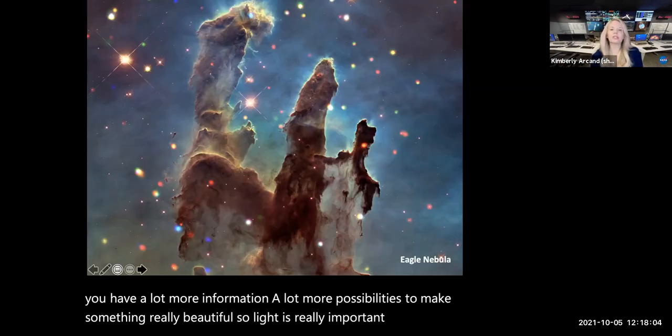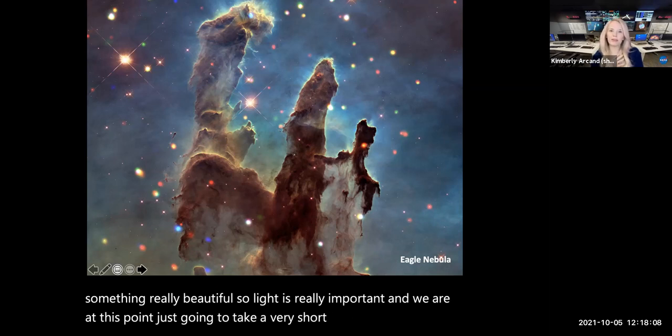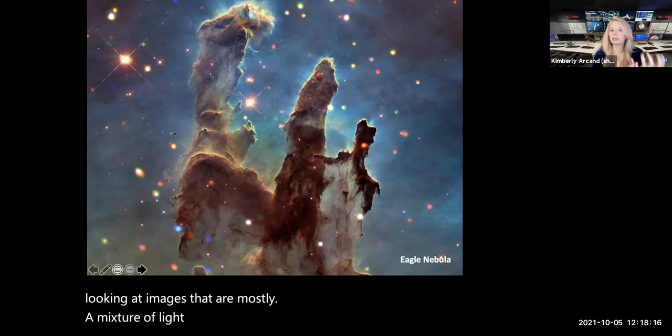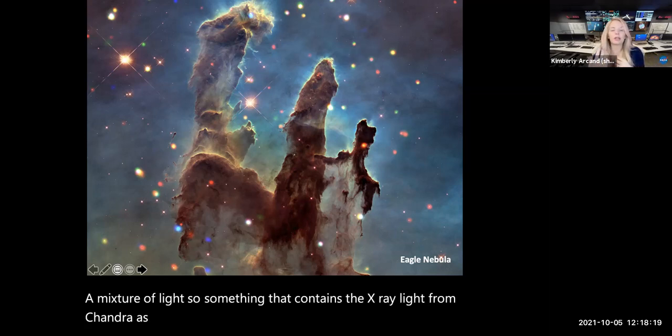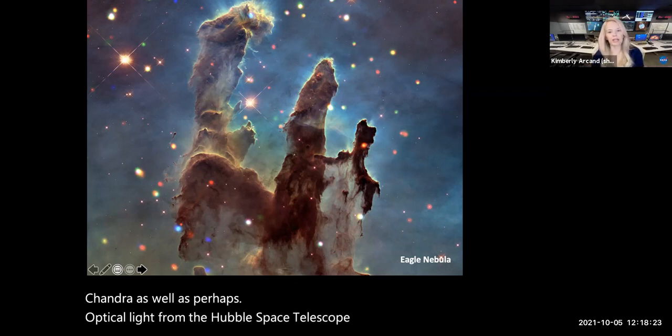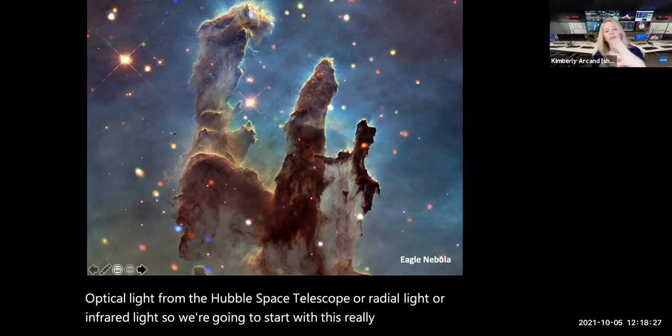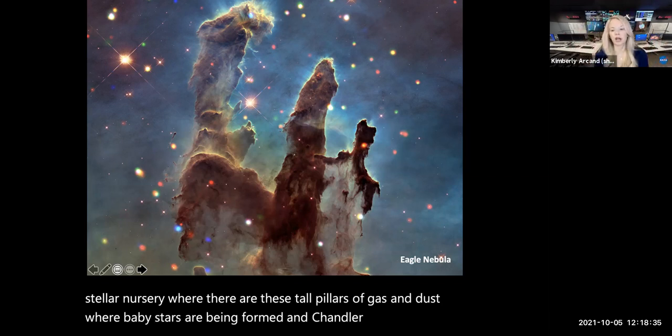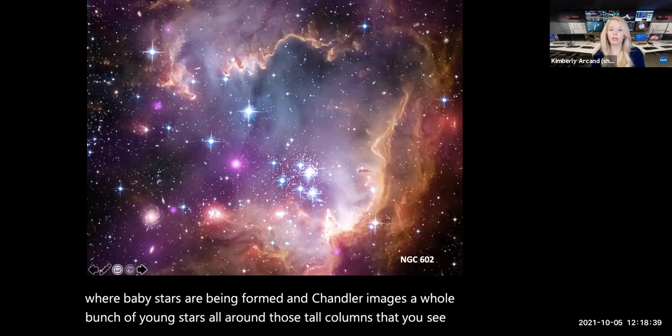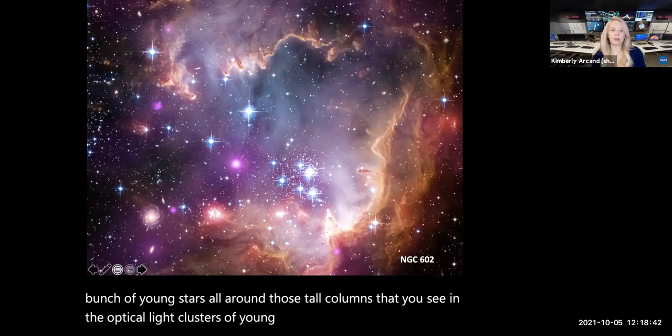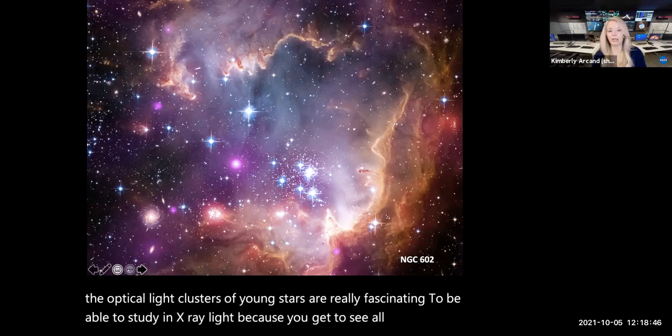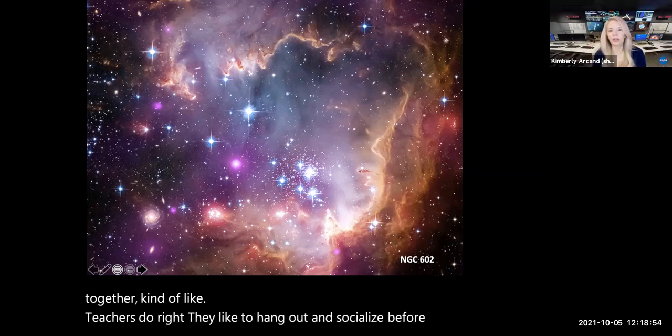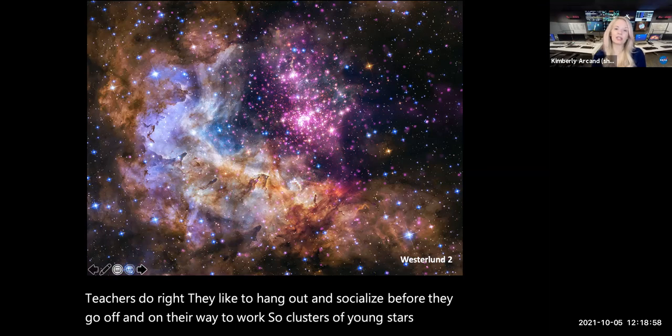So light is really important. And we are at this point, just going to take a very short trip through some of my favorite sites to see in the universe. And we're going to be looking at images that are mostly a mixture of light. So something that contains the x-ray light from Chandra, as well as perhaps optical light from the Hubble Space Telescope or radio light or infrared light. So we're going to start with this really beautiful stellar nursery where there are these tall pillars of gas and dust where baby stars are being formed. And Chandra images a whole bunch of young stars all around those tall columns that you see in the optical light. Clusters of young stars are really fascinating to be able to study in x-ray light because you get to see all of the activity that's happening.